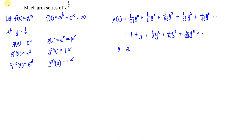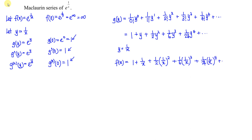So what we have to do next is substitute y equal to 1 over x into the function g(y). So we have f(x) equal to 1 plus 1 over x, plus 1 over 2 times 1 over x squared, plus 1 over 6 times 1 over x cubed, plus 1 over 24 times 1 over x to the power of 4, and so on. Then we simplify to obtain 1 plus 1 over x plus 1 over 2x squared plus 1 over 6x cubed plus 1 over 24x to the power of 4 and so on.